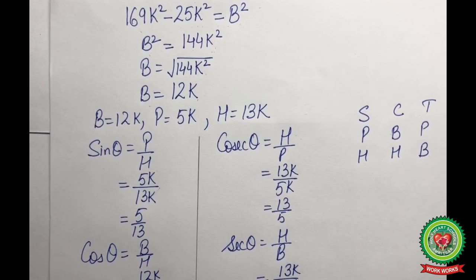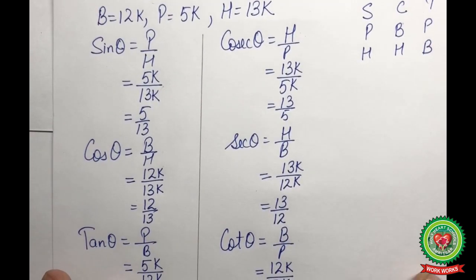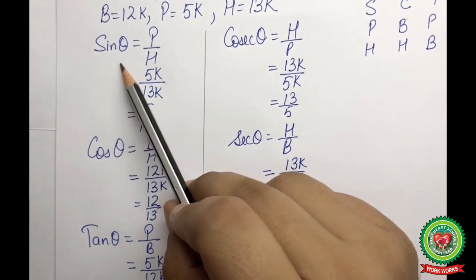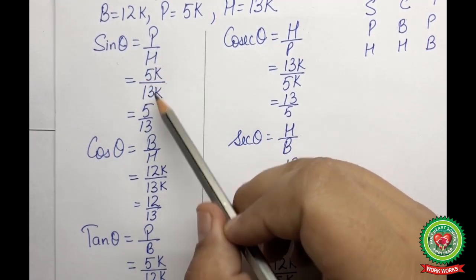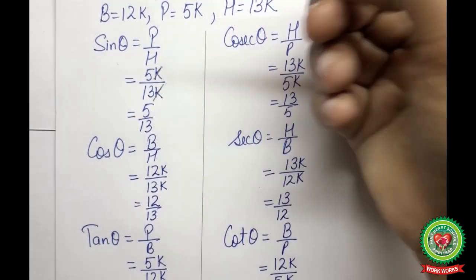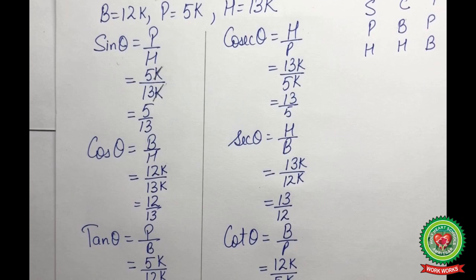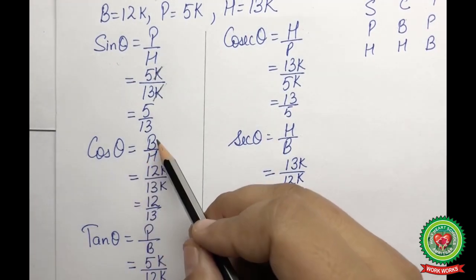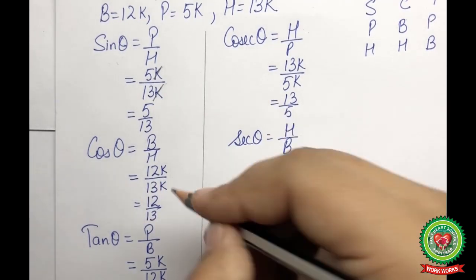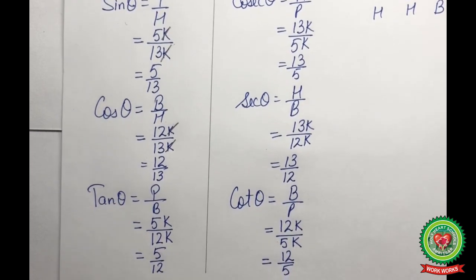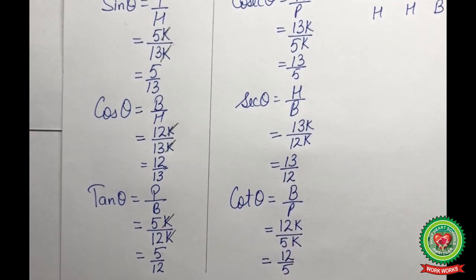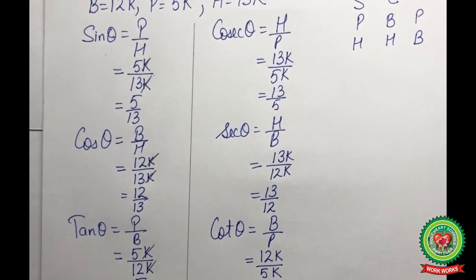Now we find all six trig ratios. Sine theta = p/h = 5k/13k = 5/13. Cosine theta = b/h = 12k/13k = 12/13. Tangent theta = p/b = 5k/12k = 5/12. Cosecant theta = h/p = 13k/5k = 13/5.